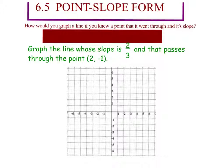Graph the line whose slope is two-thirds and that passes through the point (2, -1). So we go to (2, -1), we make a point right here. Then next I apply the slope: up two, right three. So I'll go up two, right three, and I'll end up right here.